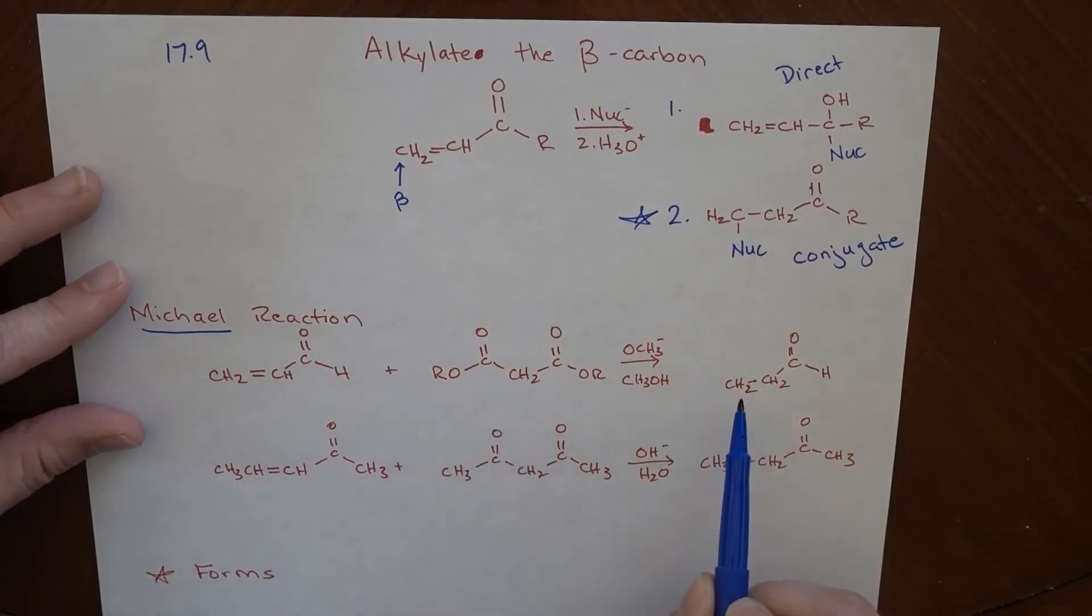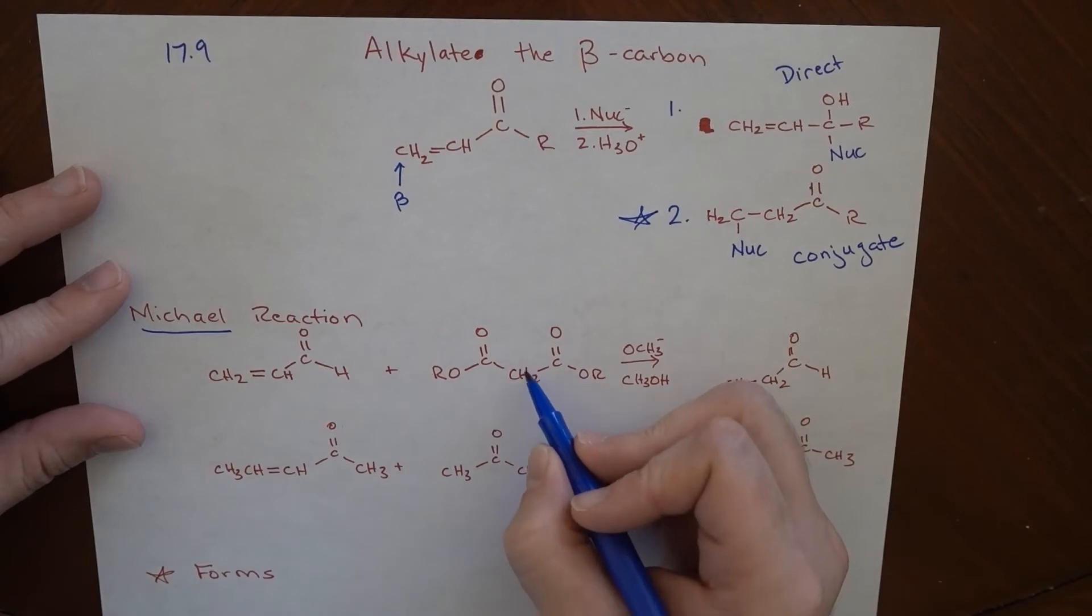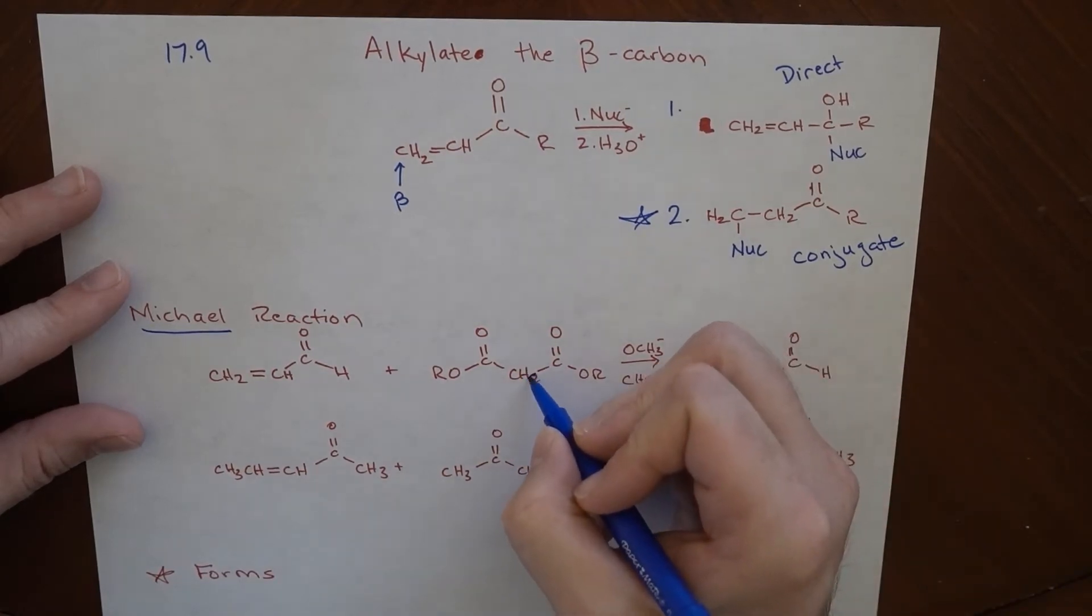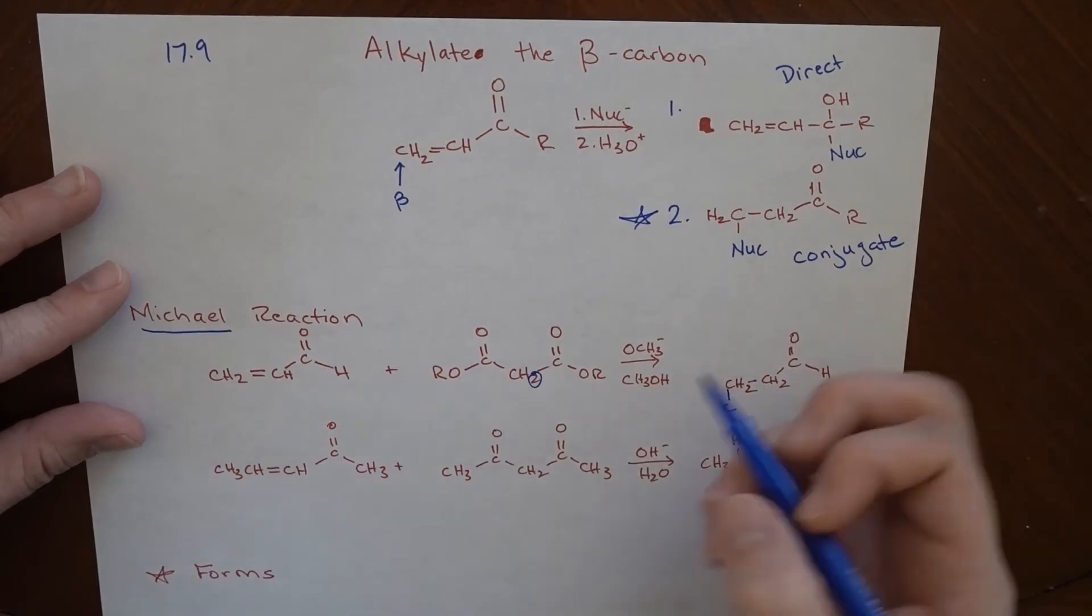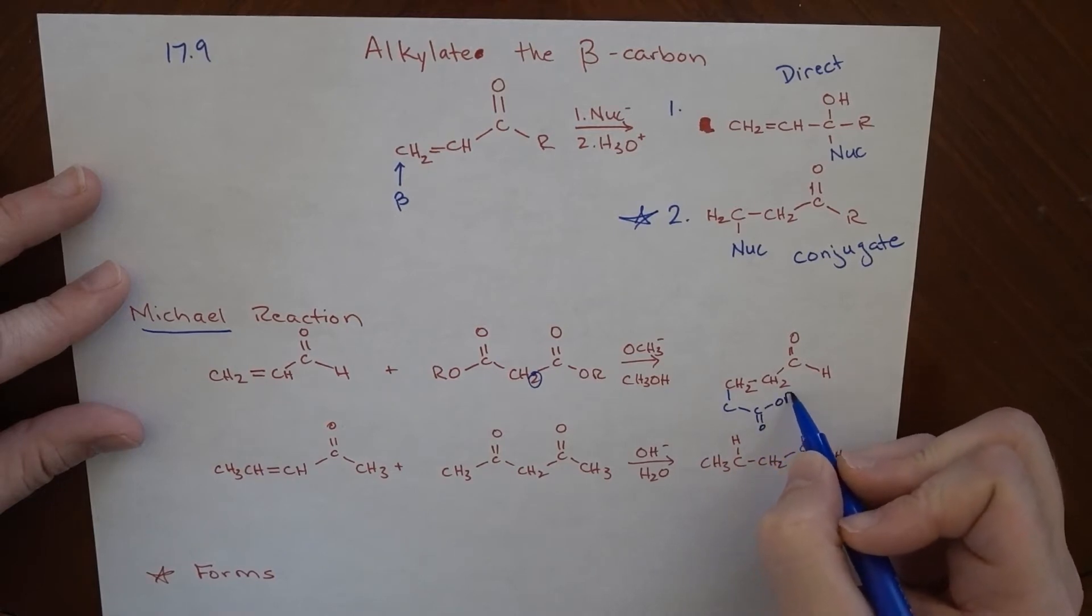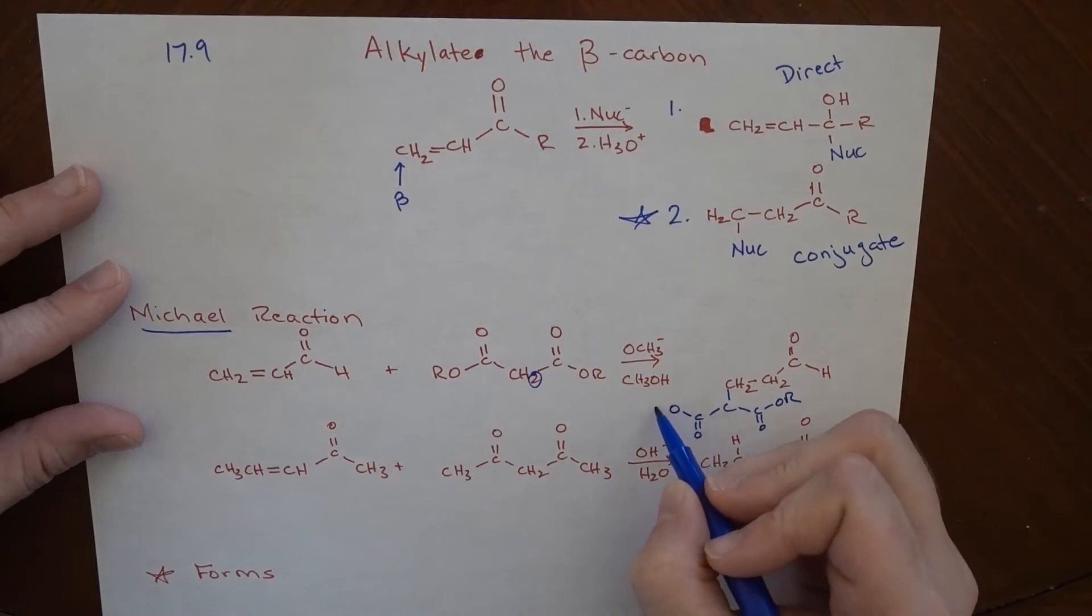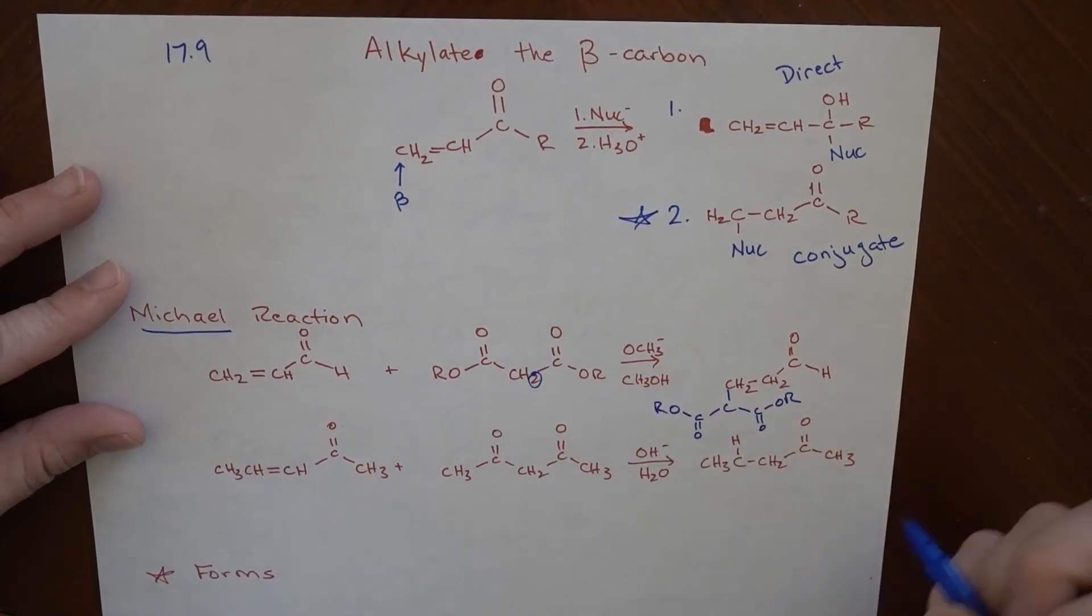So the thing that actually ends up happening in this reaction is this. This species here is going to be able to add right here at the conjugate addition part. So the base is going to remove part of this right here, this CH is going to remove one of these H's. And so that C is this C, and so it's attached to C double bond O, OR. And this is attached to C double bond O, OR.